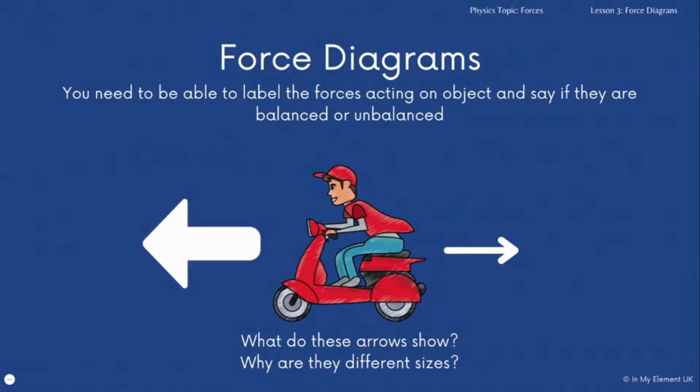So you need to be able to label the forces acting on an object and then say whether overall they are balanced or unbalanced. So what do these arrows show and why are they different sizes? The arrows are there to represent the forces and they are different sizes to show which force is the larger force.